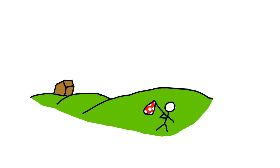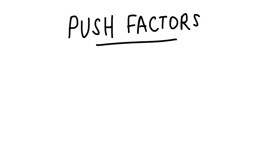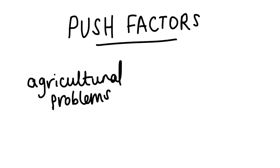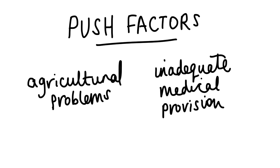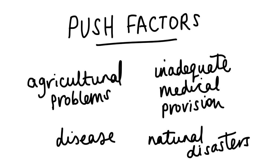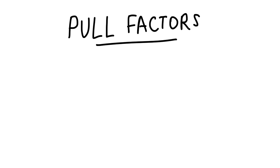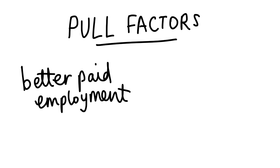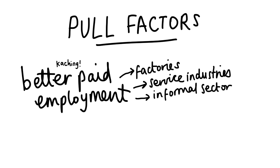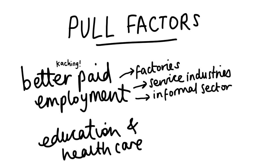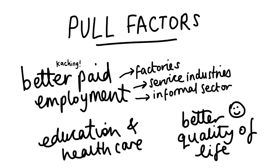Various push and pull factors cause people to move away from rural areas. Push factors include agricultural problems like desertification, inadequate medical provision, disease and natural disasters. Pull factors include the prospect of better paid employment in factories, service industries or the informal sector, education and healthcare, and overall better quality of life.